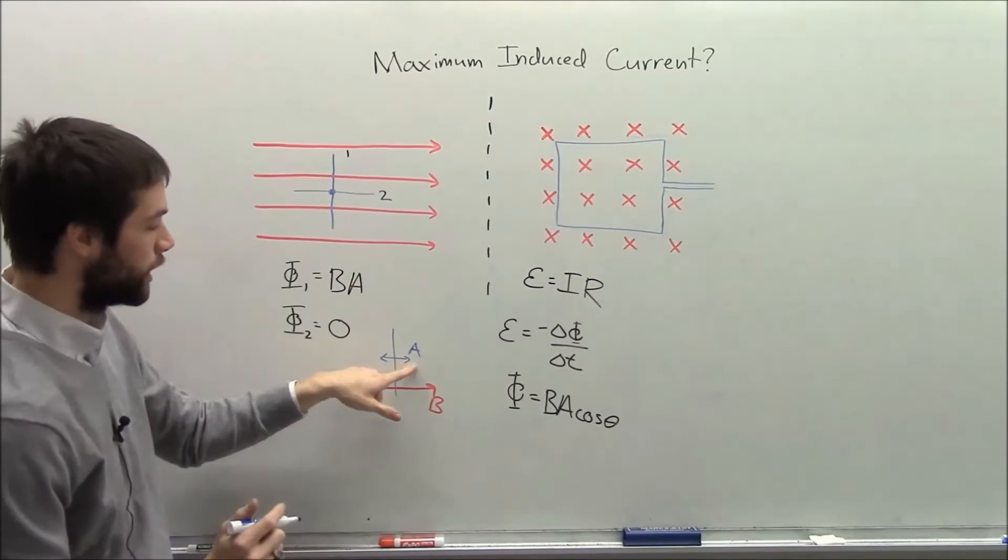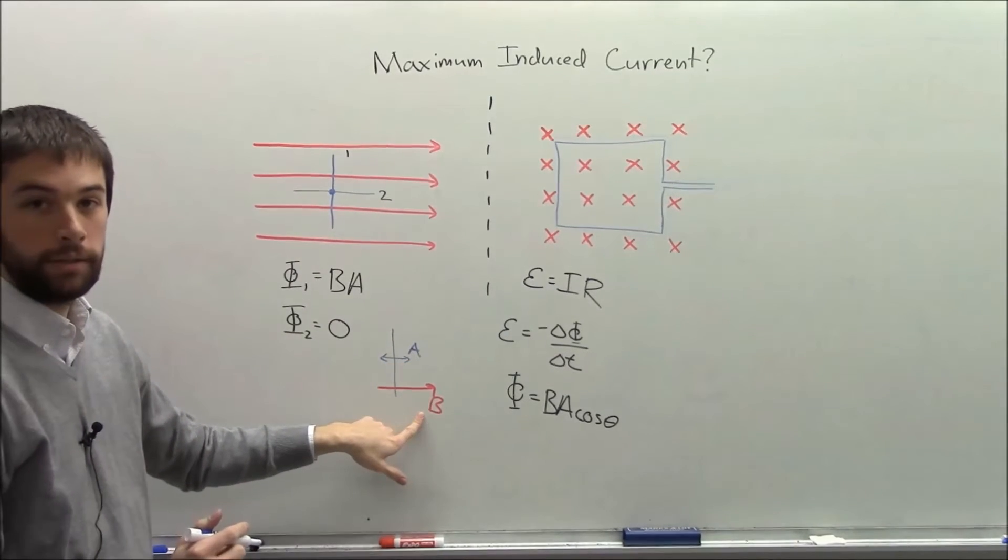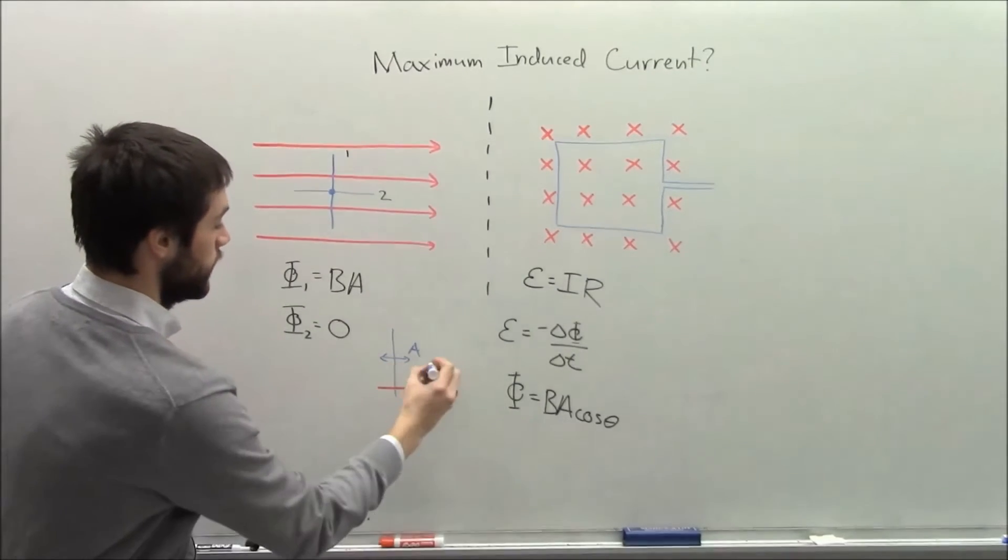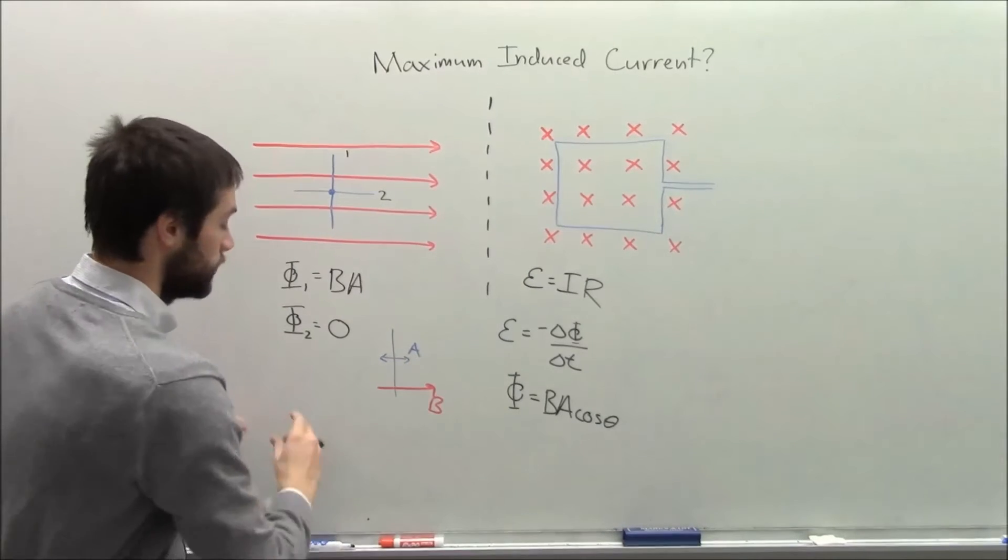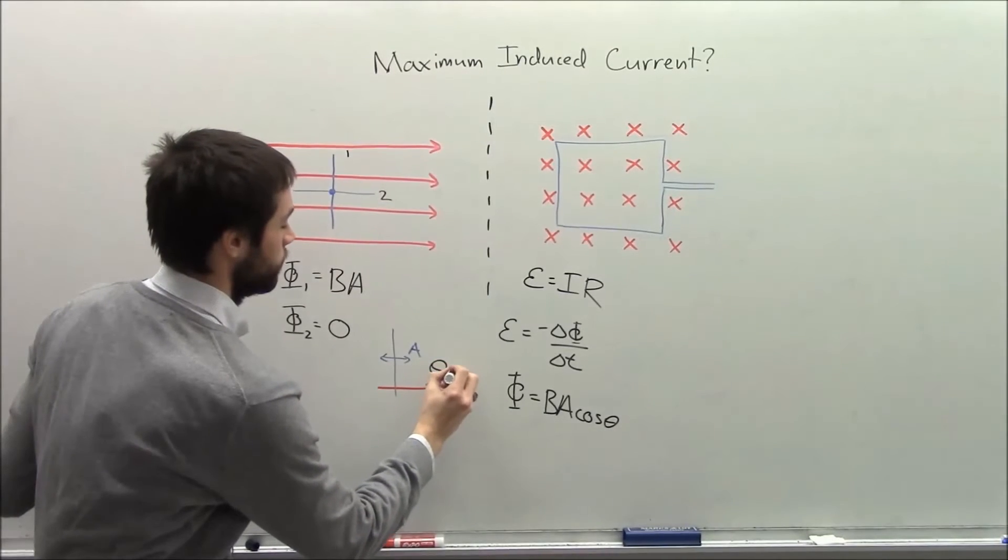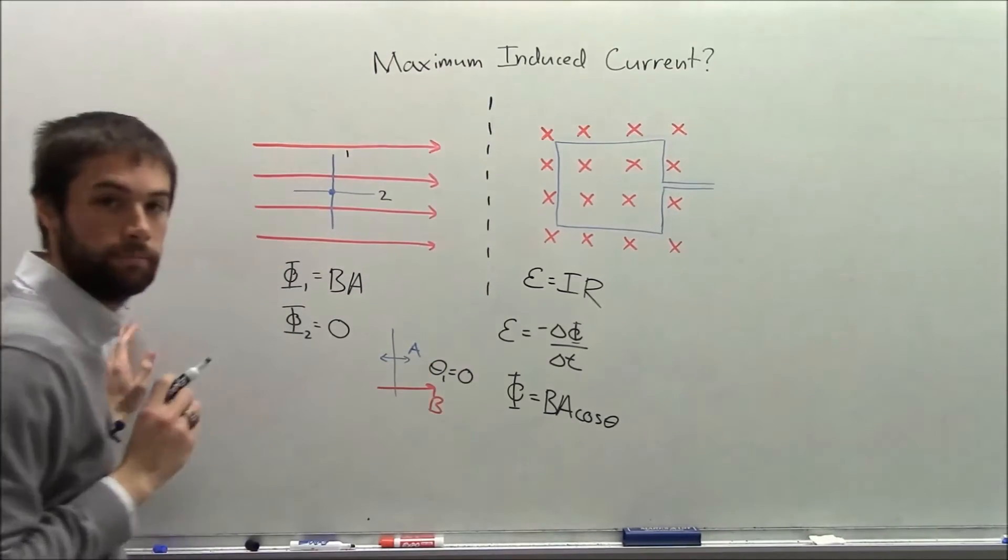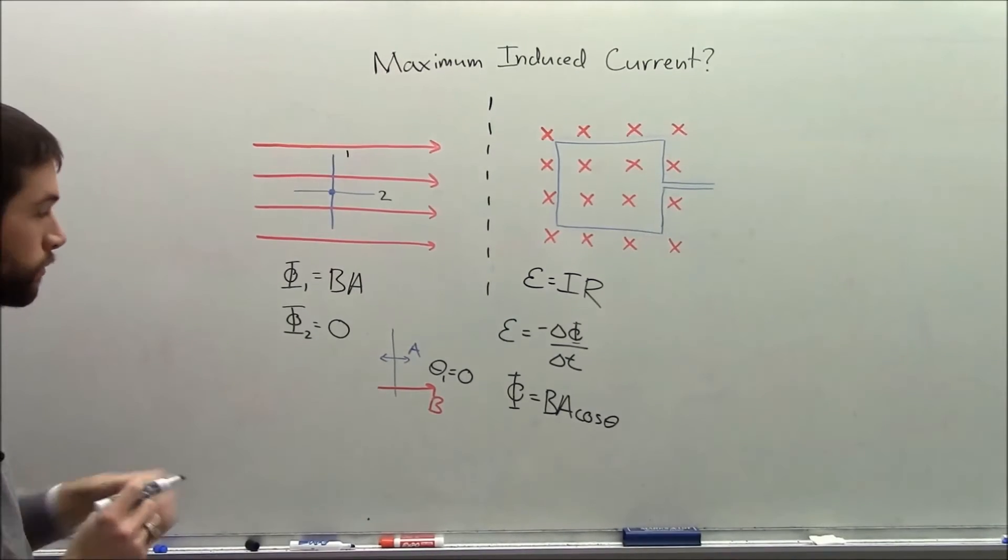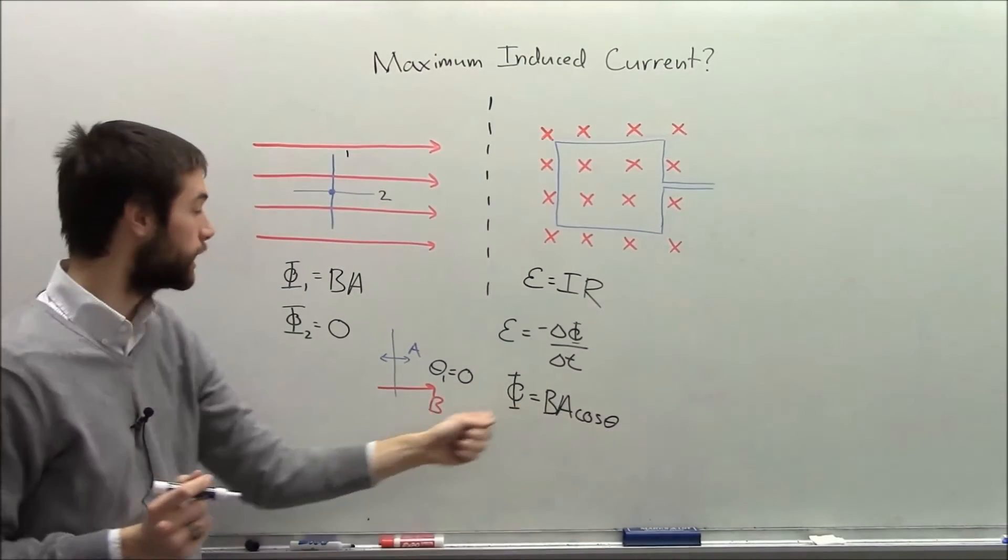So you can see the angle between a and b is 0 degrees in this case. Right? And so that means that when I take the cosine, I get 1.